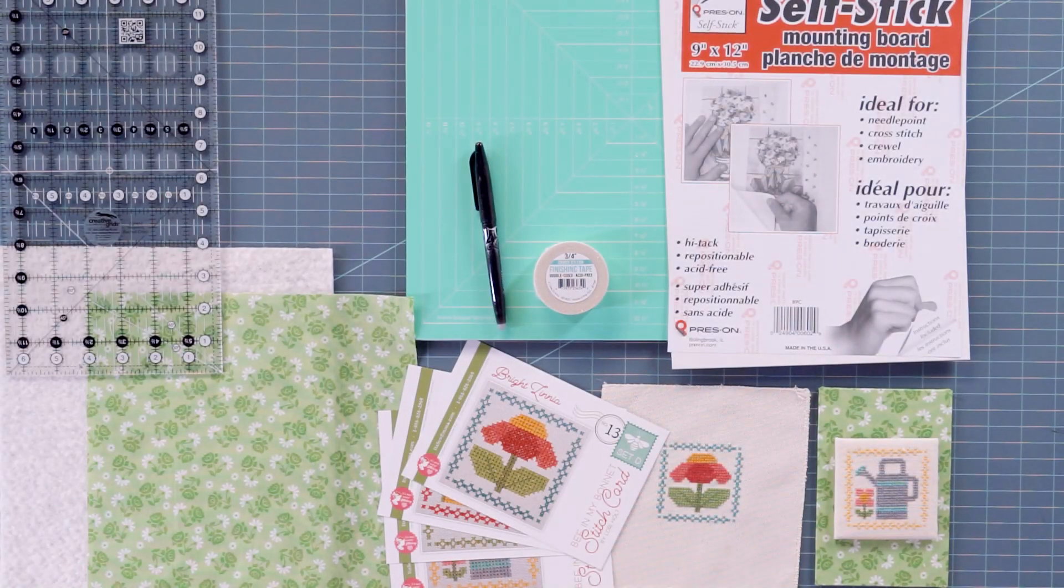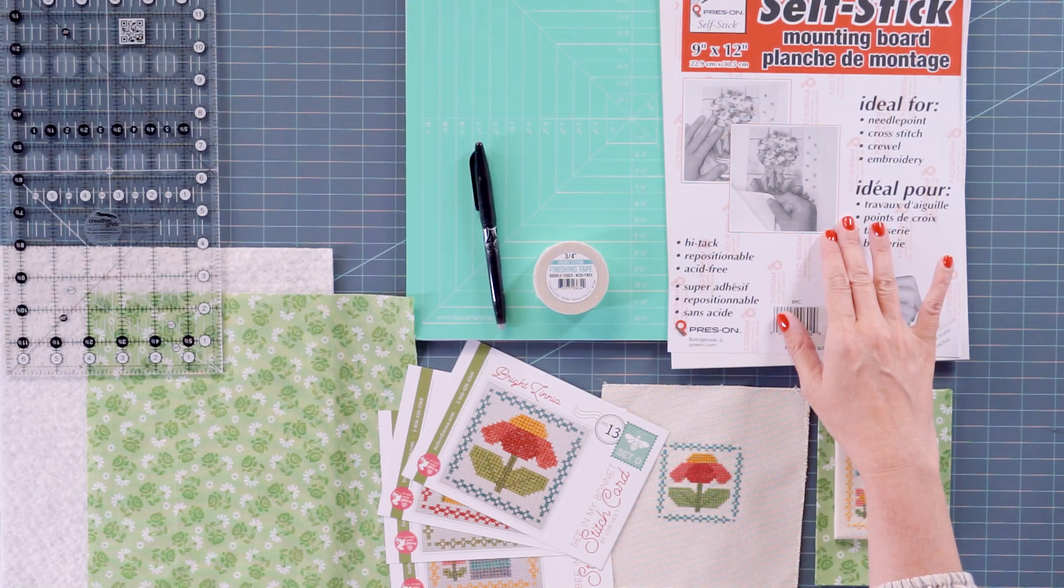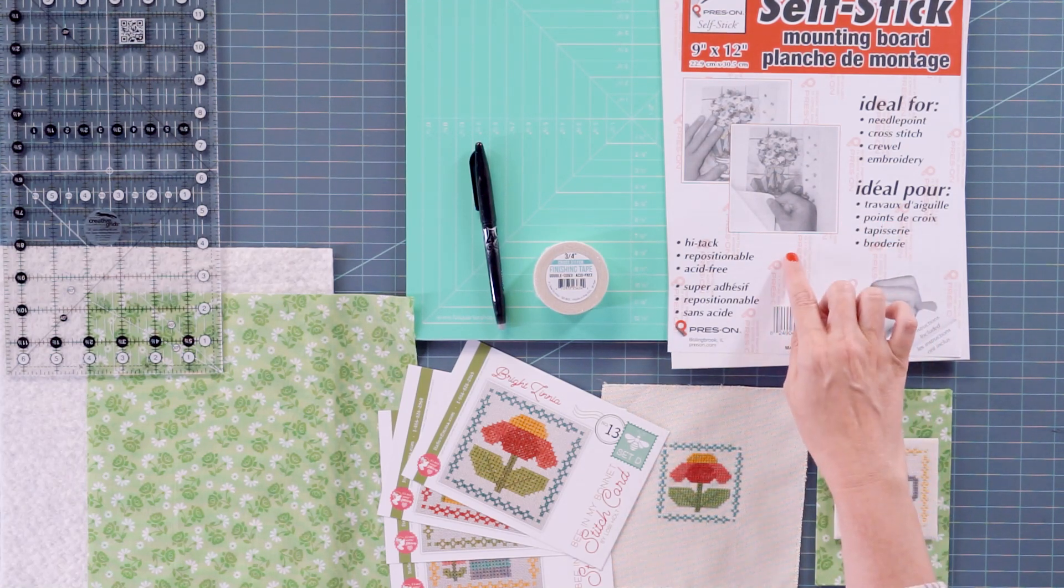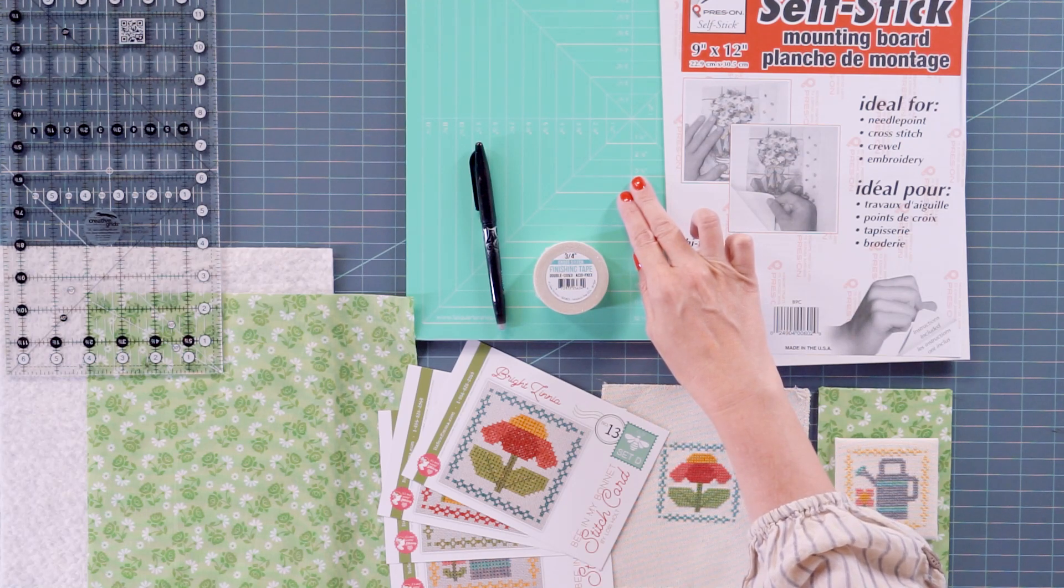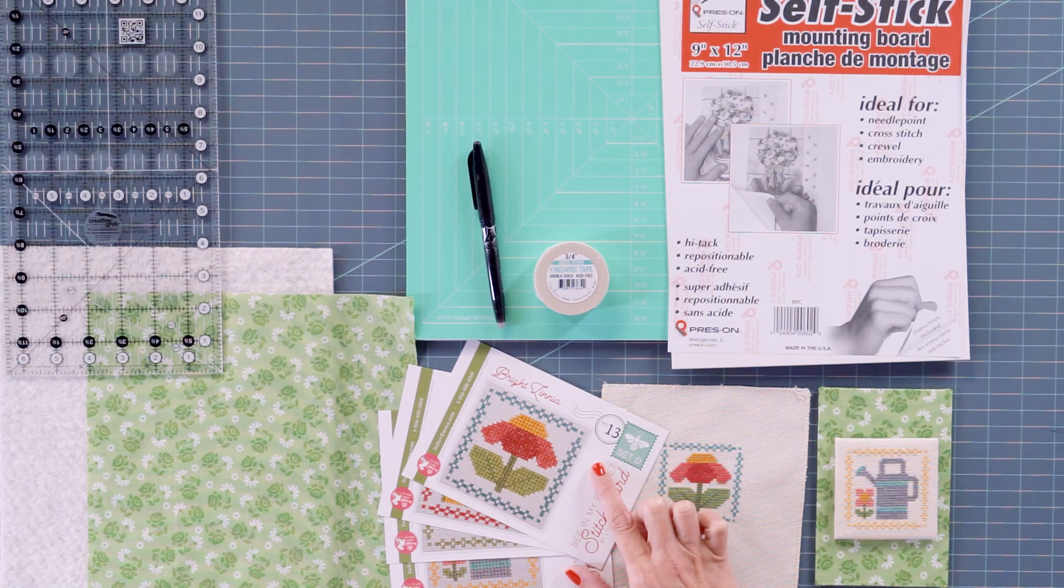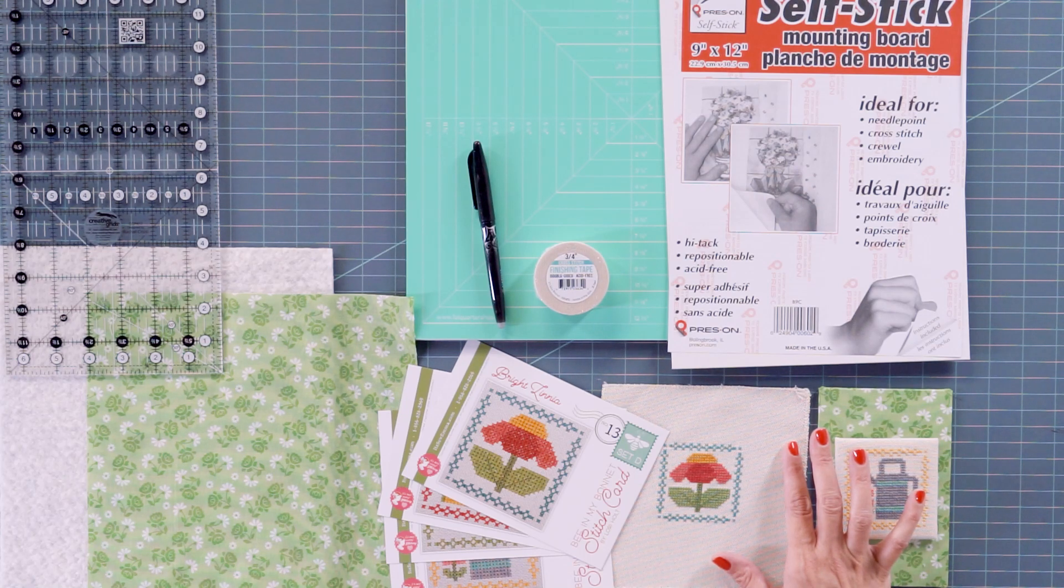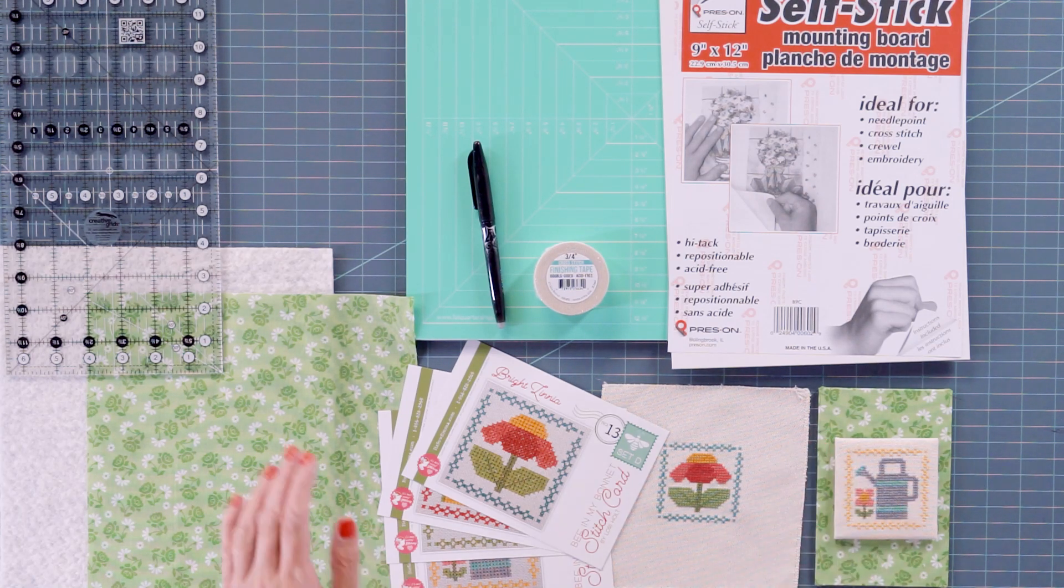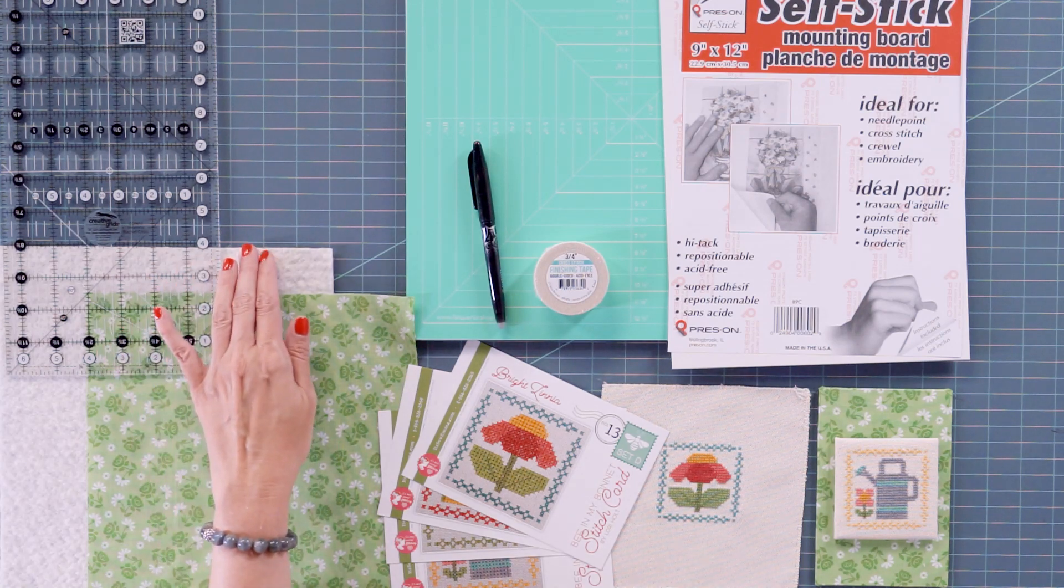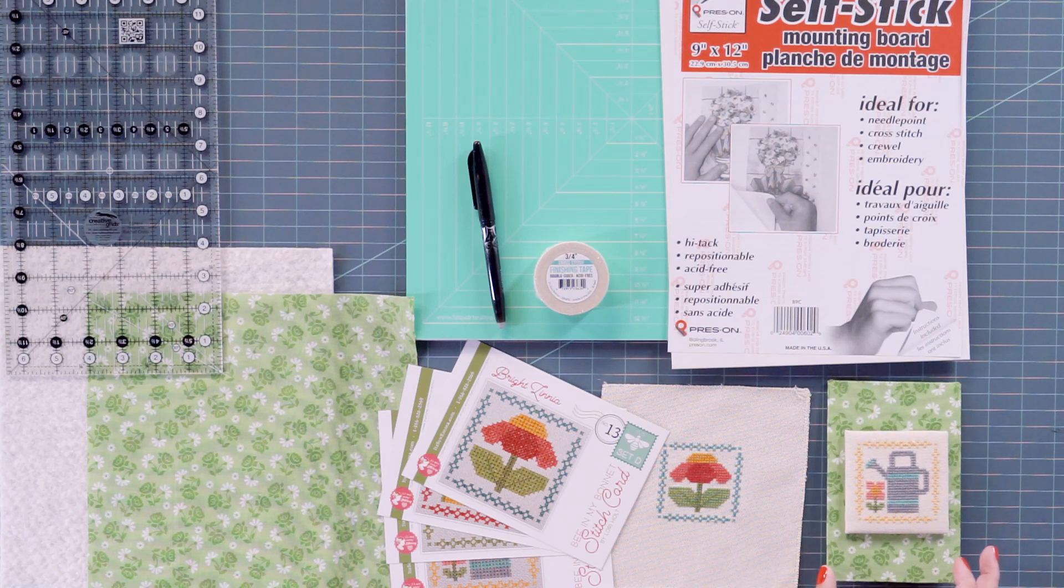Here are some general supplies that we're going to be using today. We are going to use a nine by twelve sticky board, and if you're going to do all four, you'll need two of these. We're going to use a Kimberly's cut rotating mat, cross stitch finishing tape, a marking tool. Of course, we had to stitch our design. We stitched with stitch card set D, and we stitched it using the called for DMC on twenty-five count barley. We've got a scrap of fabric, a ruler, and a scrap of batting. So that's all you need. A lot of you guys might already have this in your sewing room, and this is what we will be making today.